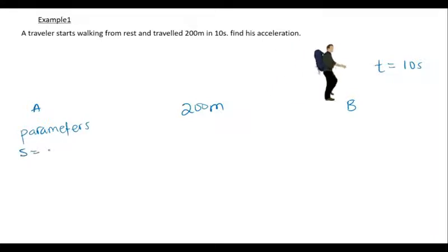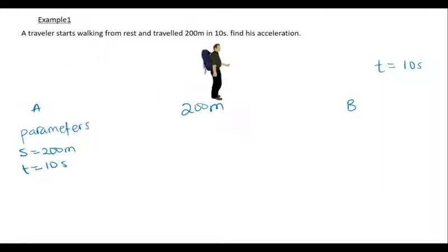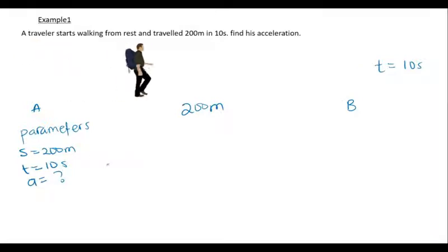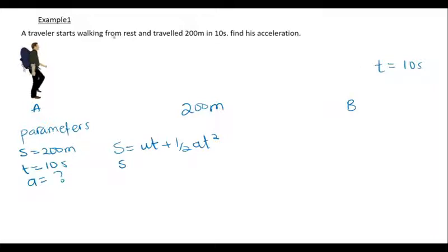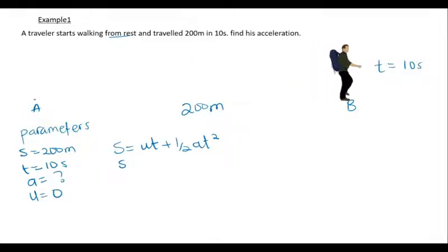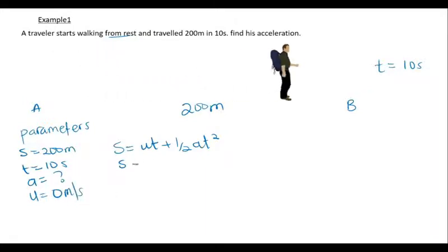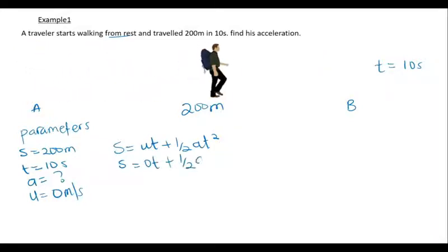We have the distance S = 200 meters, and the time taken = 10 seconds. We are asked to find the acceleration. We use the distance formula S = UT + ½aT². Because the traveler starts from rest, the initial velocity U is zero. So we have zero times T, plus ½aT², meaning the UT term goes away.